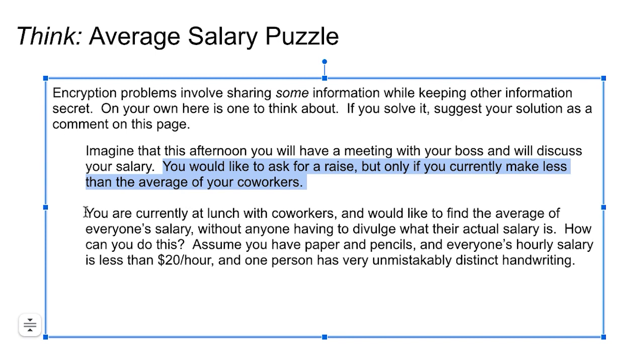So assume you have paper and pencils people could use. Assume everybody's hourly salary is less than $20 an hour. And let's say, assume that one person has very unmistakable, distinct handwriting. So you can't just say, everybody try and disguise your writing and put it on paper and put it in the middle, that you're going to be able to tell. So that's not going to work. How might you do this? Let me encourage you to post a reply to this video with your solution. And there could be various solutions that people come up with.